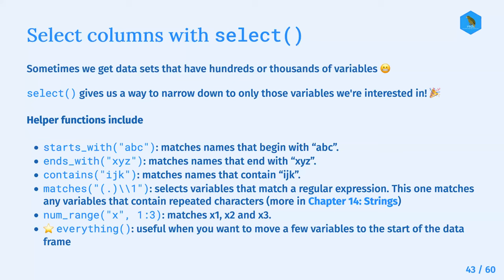One of my favorites is everything(), which is really useful when you want to move a few variables to the start of the data frame. Mutate creates a new variable based on existing variables and puts it at the very end of the dataset by default. Being able to select that new column and bring it to the front, with everything() taking care of the rest, is really nice - otherwise you'd have to manually list all the columns you want to keep.